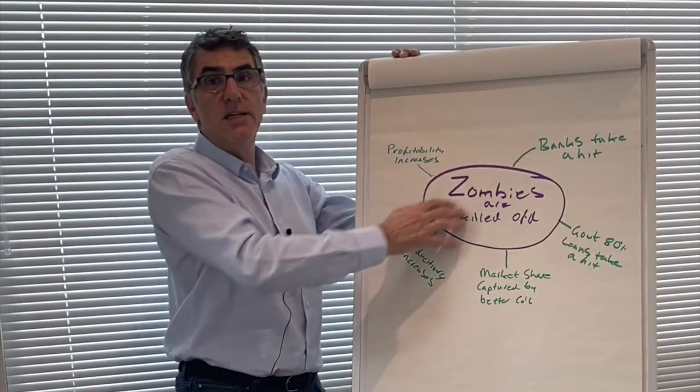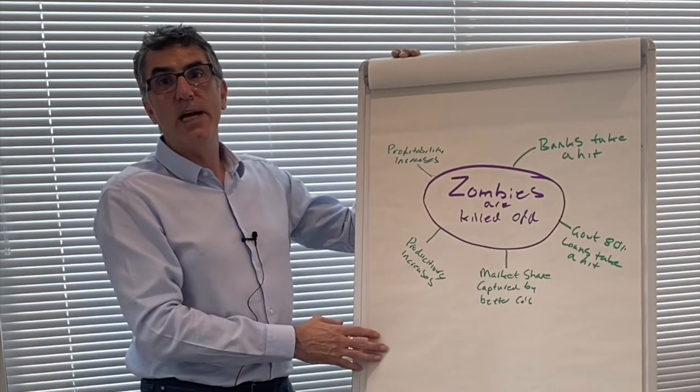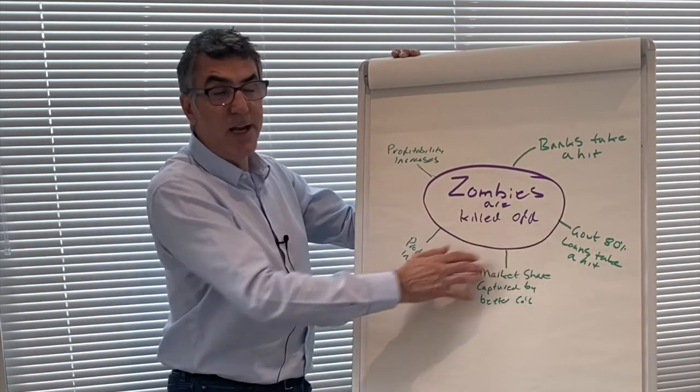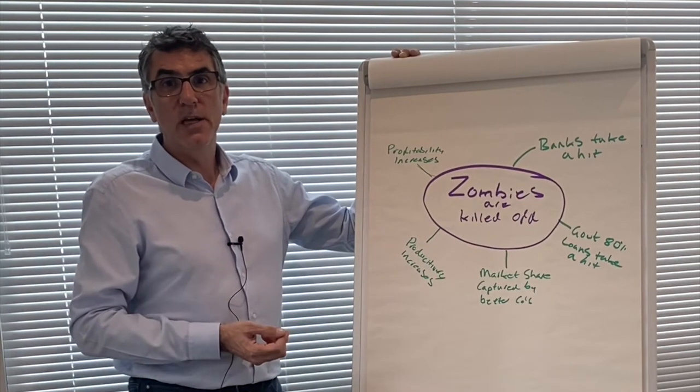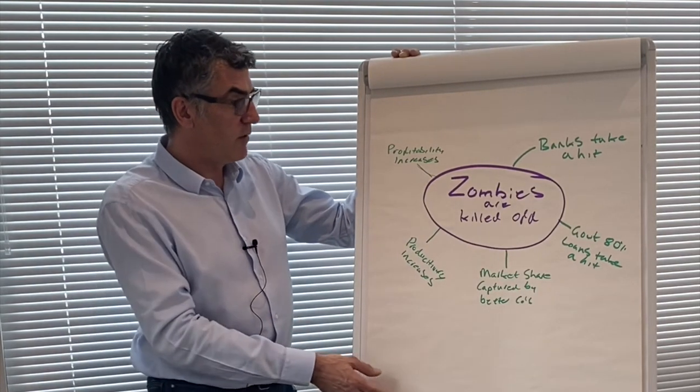I think that could be a theme that we see developing as we go through. But for sure, banks are going to take a hit. For sure, government debt is going to take a hit because if they're underwriting 80% of those loans, then that's going to be costly as some of these loans default.